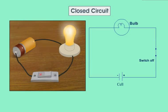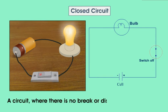Closed circuit. When the switch is on, the bulb glows. There is no break or disconnection in the circuit. Such a circuit where there is no break or disconnection is called a closed circuit.